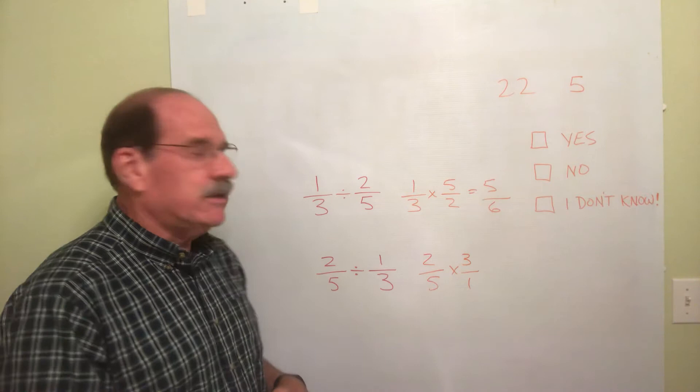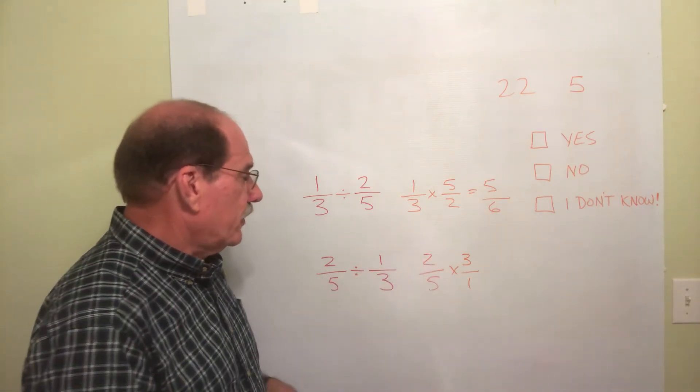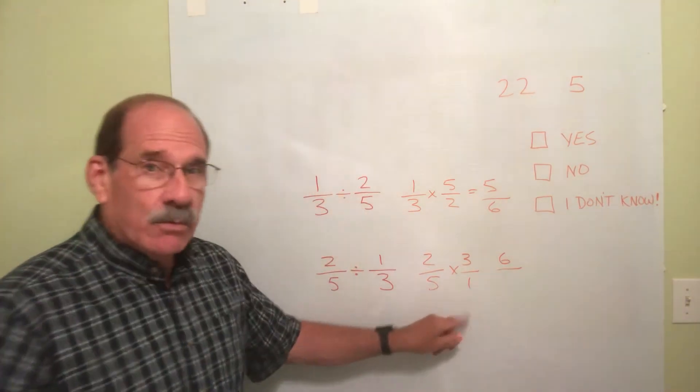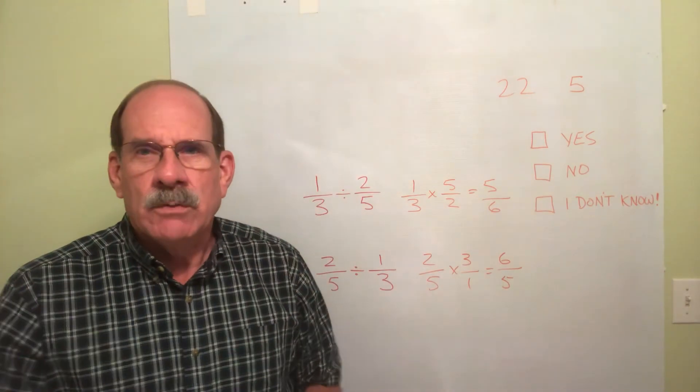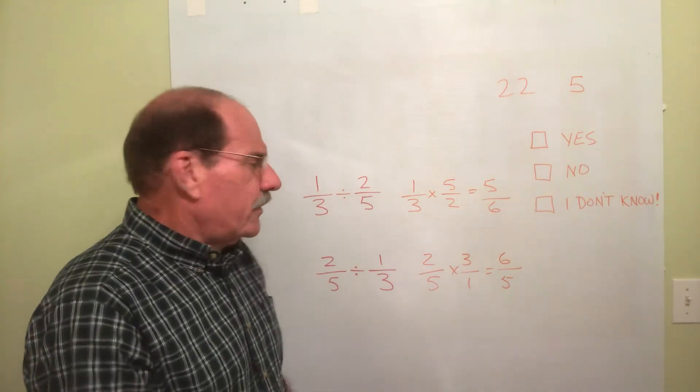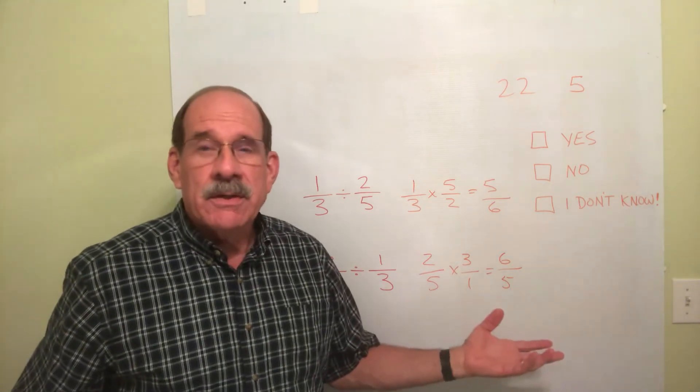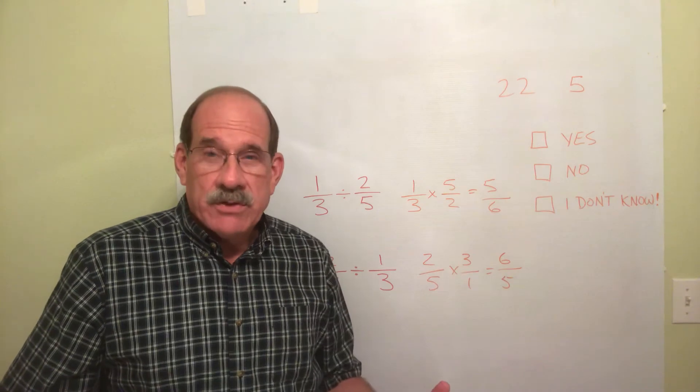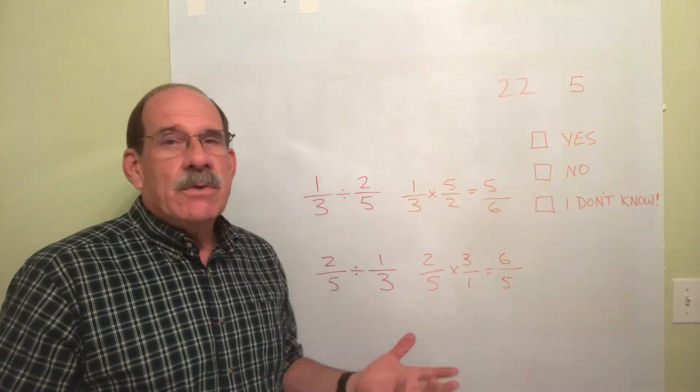Whoa. Just a multiplication problem. So, now it's 2 times 3 is 6. 5 times 1 is 5. What's wrong with that number? Well, there's nothing, quote, wrong with it. That's mathematically the right answer, but it's not in the proper form. That's an improper fraction. Bigger number on top, smaller on the bottom. So, I do what?